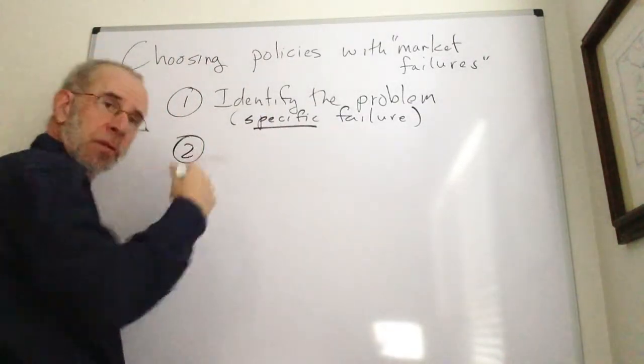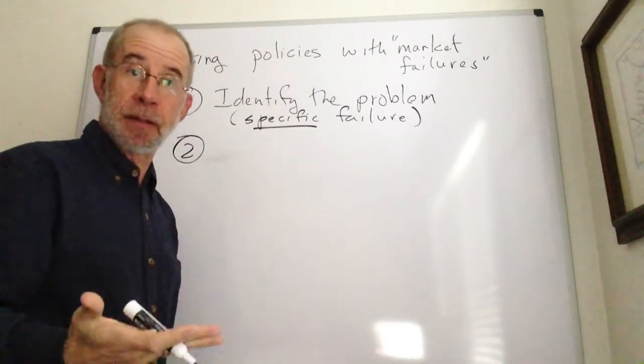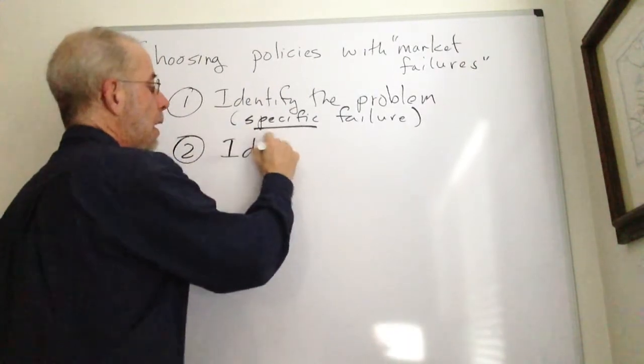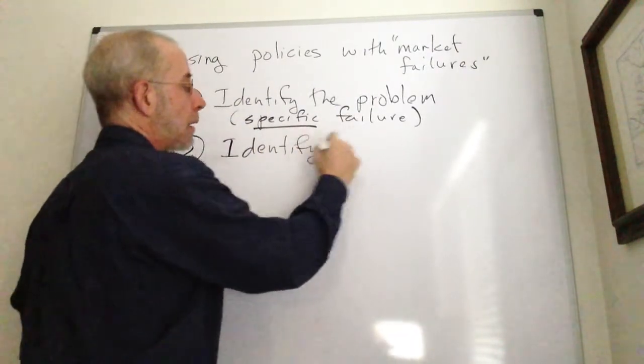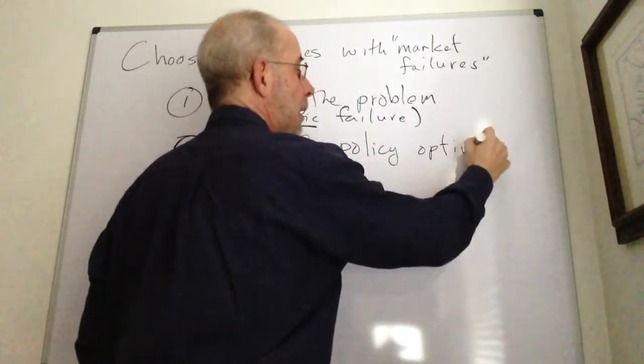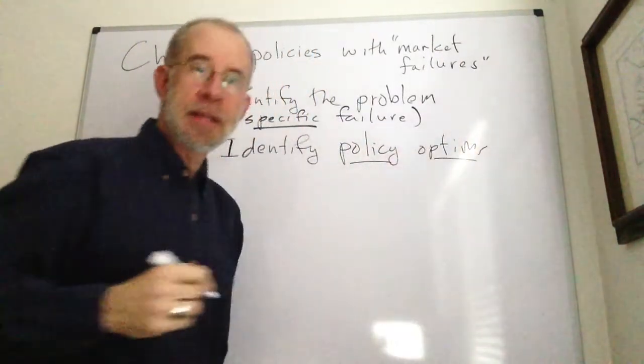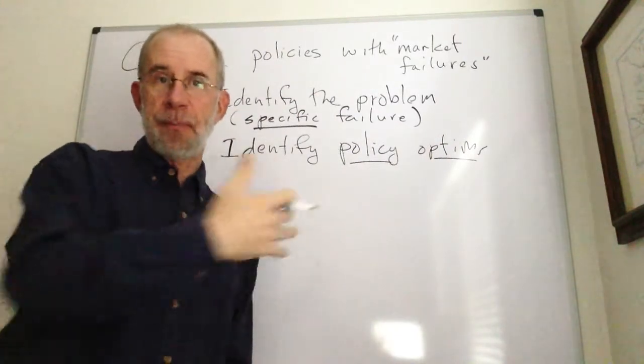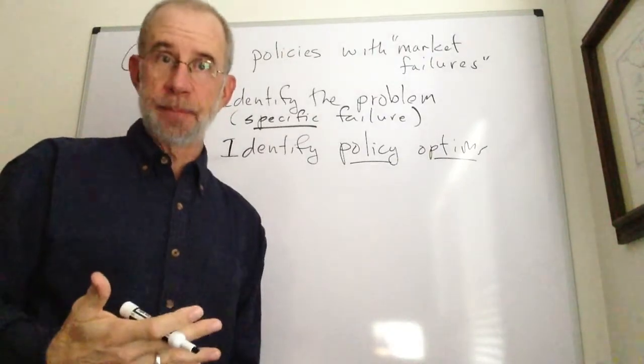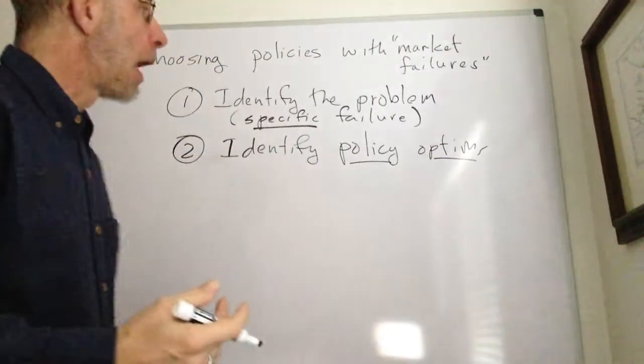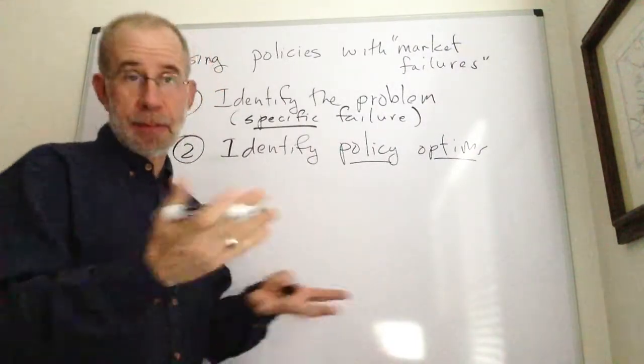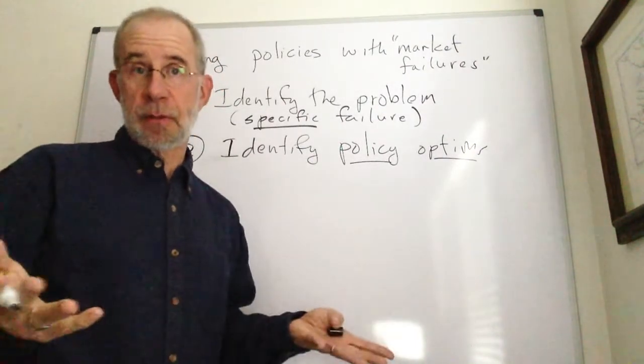And then we're going to think about trying to do something about it. And at its core, one of the critical parts is trying to think about the various types of policy options that would deal with this problem. Because there are all sorts of things that you can do when you've got a difficulty. Let me give you sort of an extreme example.